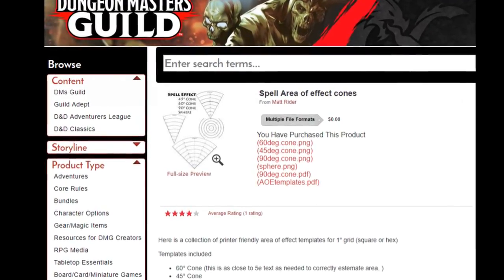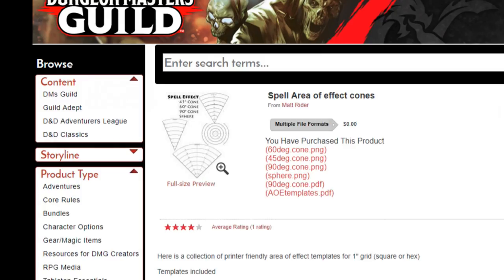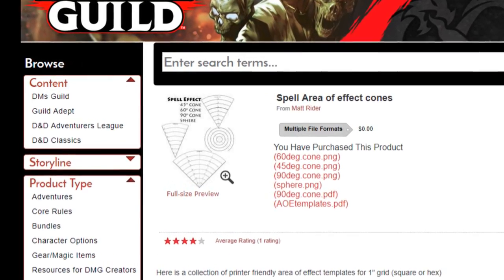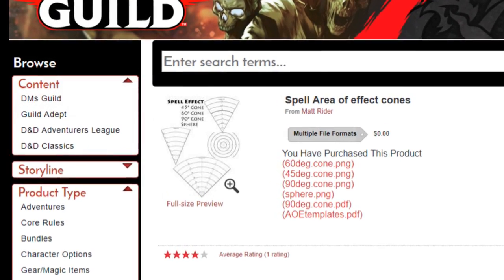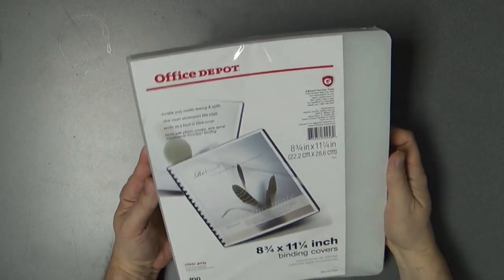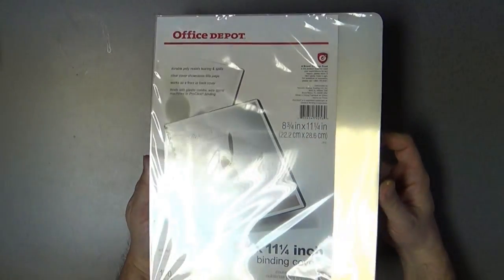I picked up the template itself for free on the Dungeon Masters Guild and it's actually for spell area of effect cones, but they had a sphere so I used that. I needed these office binder covers too, and they're plastic so let's check this out.